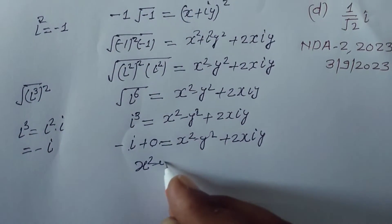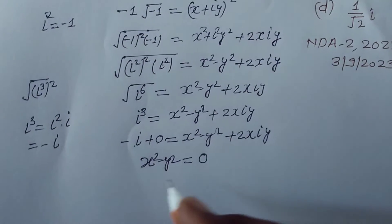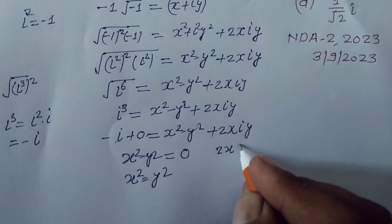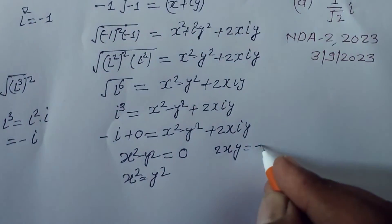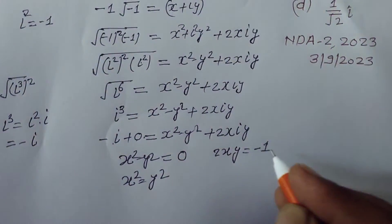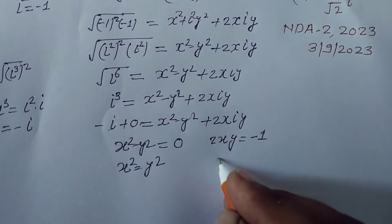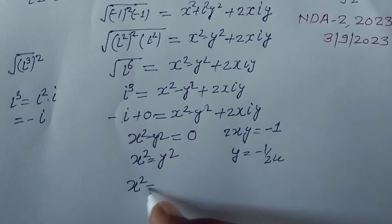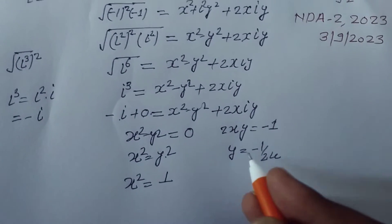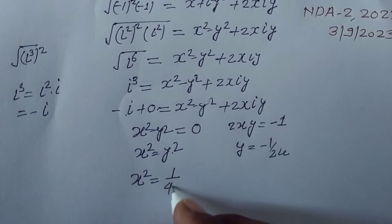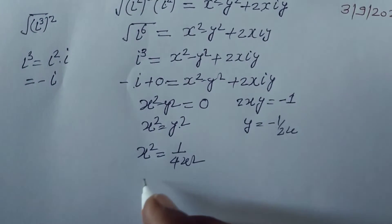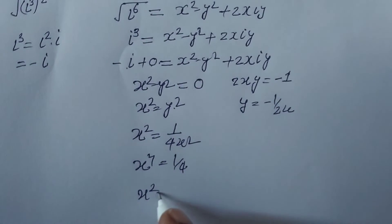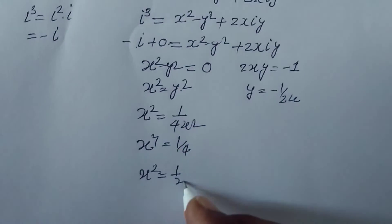Comparing real and imaginary parts: x² − y² = 0, meaning x² = y², and 2xy = −1, so y = −1/(2x). Substituting into x² = y² gives x² = 1/(4x²), therefore x⁴ = 1/4 and x² = 1/2.